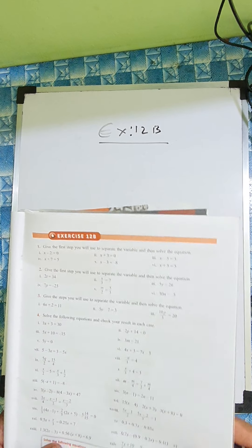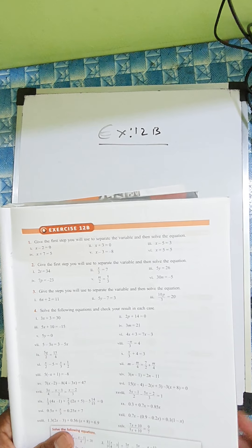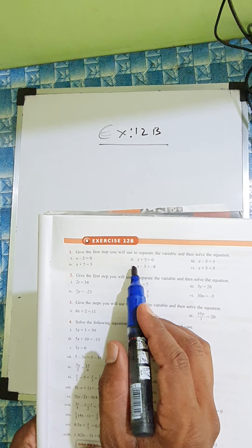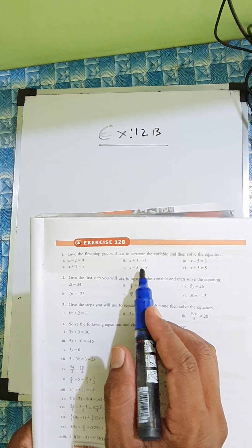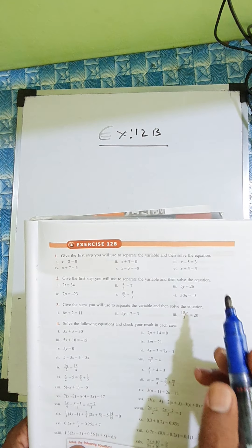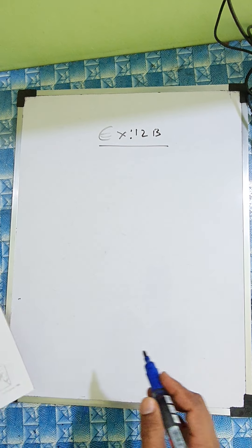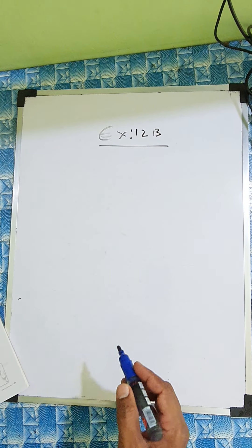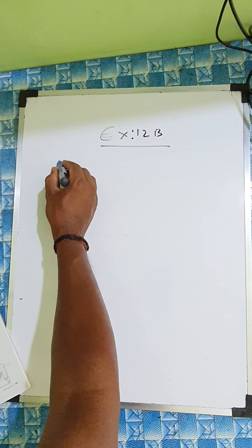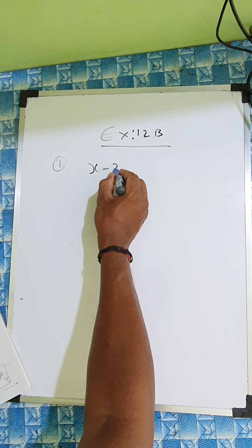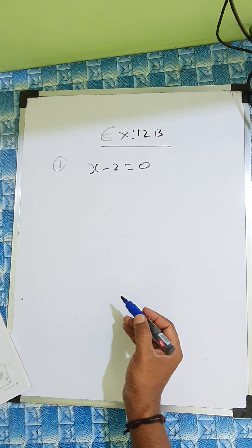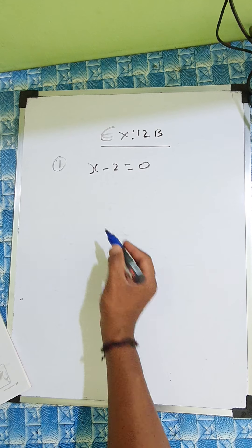Next exercise, 12B. Give the first step you will use to separate the variable and solve the equation. So they are asking for the first step — it's an easy one. See the first question: x minus 2 equals 0. So give the first step.